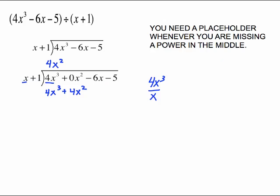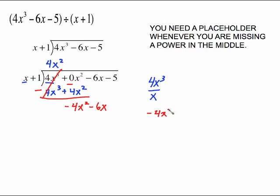So we're ready to do our subtracting routine. Draw the line, change the signs. So 4x cubed and negative 4x squared go away. 0 minus 4 is negative 4x squared. Bring down your next term, negative 6x, and begin dividing again. Negative 4x squared over x gives me negative 4x.